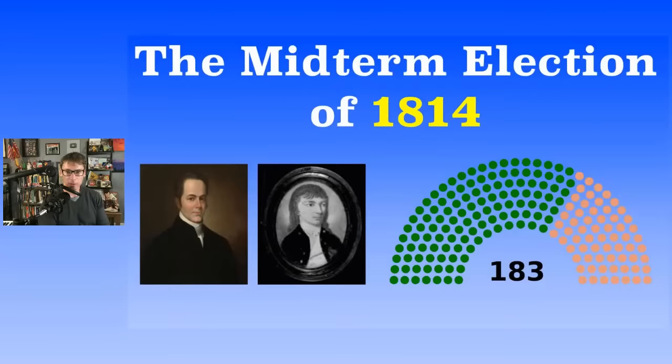Specifically in the Senate, there were 36 seats total; 19 were needed for a majority; 12 were up for election. Democratic-Republicans lost seats, but the Federalists picked up a seat. After the election, the Democratic-Republicans had 22 senators and the Federalists had 11. By this time, the Federalists and Democratic-Republicans were mostly on the same page, so it wasn't really that big a deal.